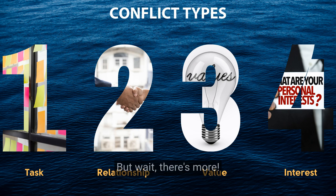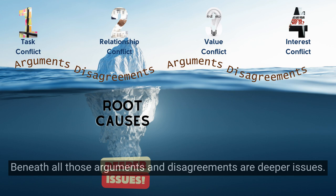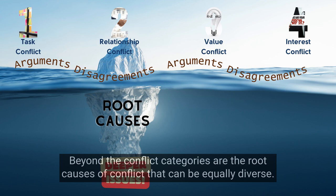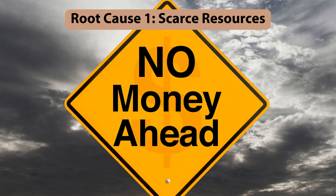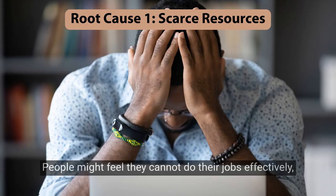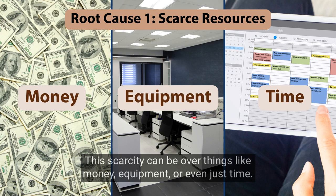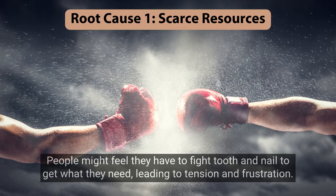Sometimes what we see on the surface is just the tip of the iceberg. Beneath all those arguments and disagreements are deeper issues. Beyond the conflict categories are six common root causes. Root cause 1: Scarce resources. Imagine a department with a limited budget — people might feel they cannot do their jobs effectively, leading to competition and resentment. This scarcity over money, equipment, or time can make people feel they have to fight tooth and nail to get what they need, leading to tension and frustration.